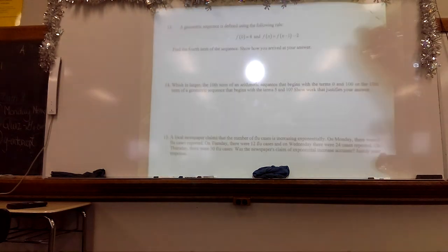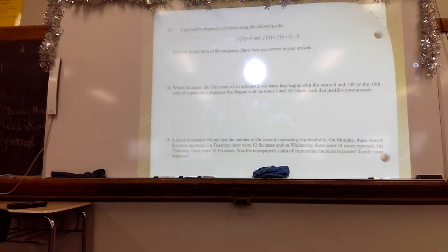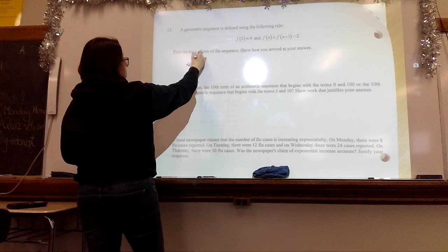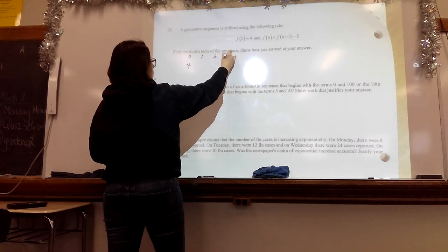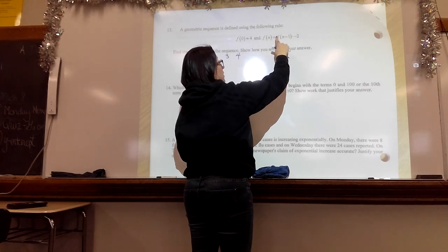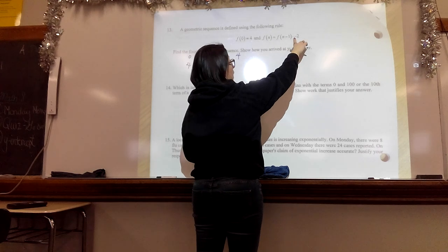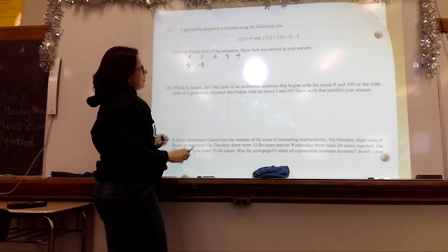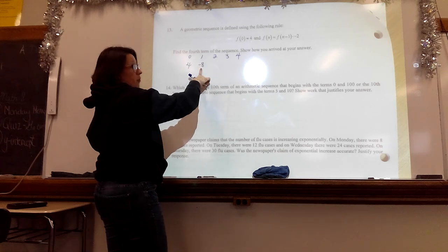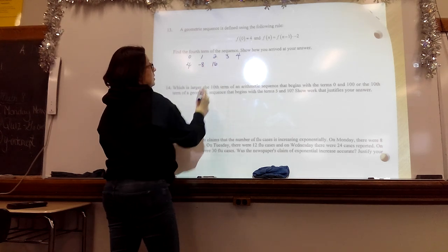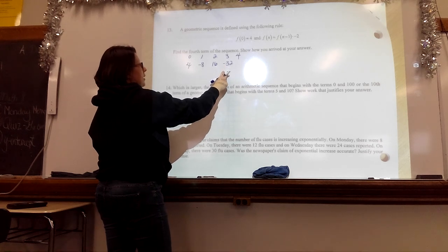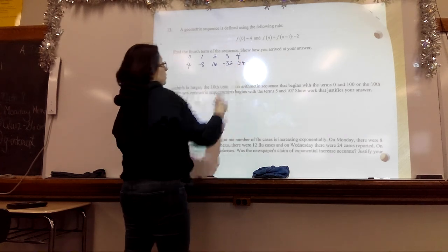Number 13, a geometric sequence is defined using the following rule. Find the fourth term of the sequence. So this tells me the starting one. The first one is 4. What does this mean? It means for each one, take the answer of the one before it and multiply it by negative 2. So for this one, I have to take 4 and multiply it times negative 2, that's negative 8. Take the answer of the one before it and multiply it by negative 2, that's 16. Take the answer of the one before it, multiply it by negative 2, it's negative 32. Take the answer of the one before it and multiply it by negative 2, and that is 64.